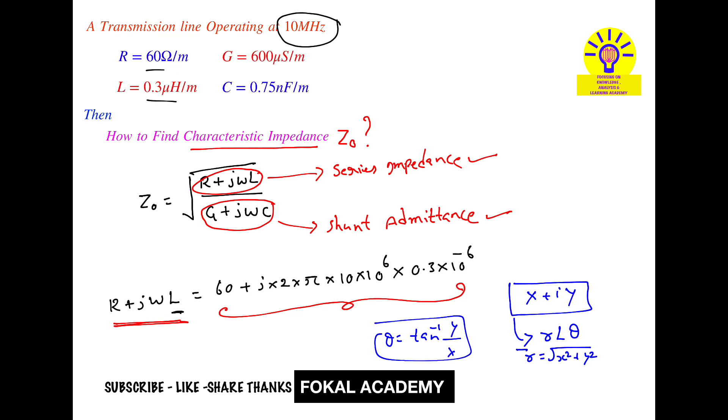Here, this is x and this is y in the x + jy form. Converting to polar form, we get 62.7 with a phase angle of 17.44 degrees. This equals R + jωL.